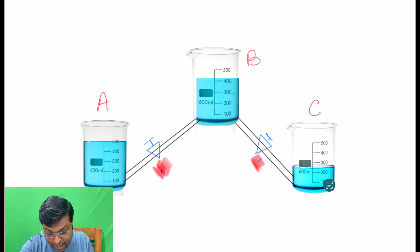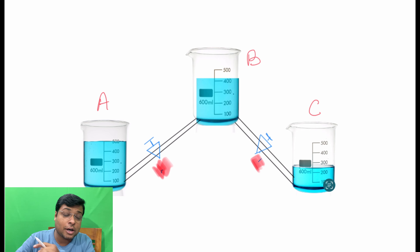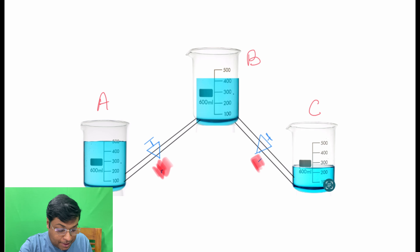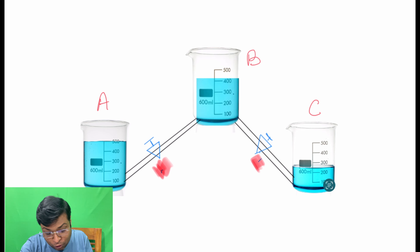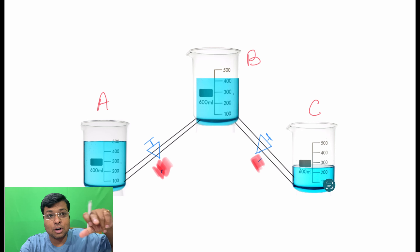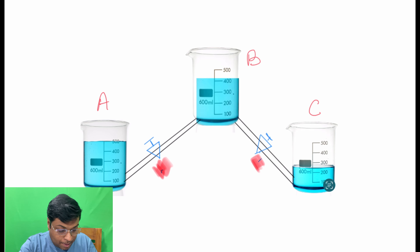You connect beaker A and beaker B with a tube so that water can flow between them. Similarly, you connect beaker B and beaker C with another tube at the bottom. You also place a valve in the tube between A and B, and another valve to control flow between B and C.